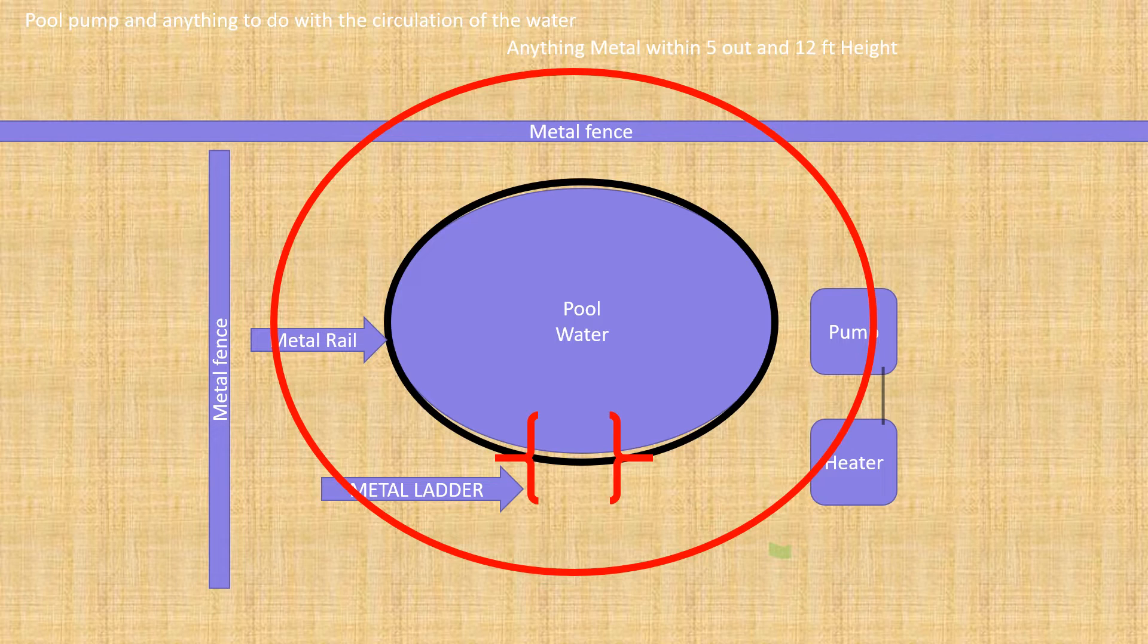So I start here at the heater and I dig my trench, hook up to the lug at the heater and I dig a trench underground going over to the pump and then I attach onto the lug that's at the pump.